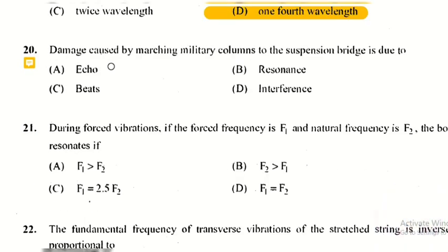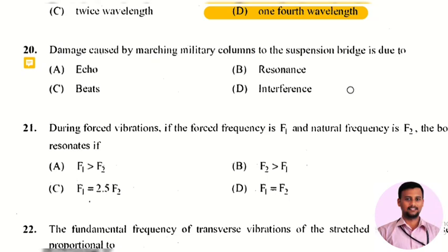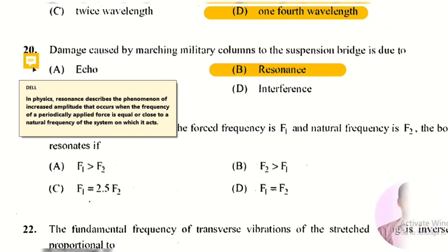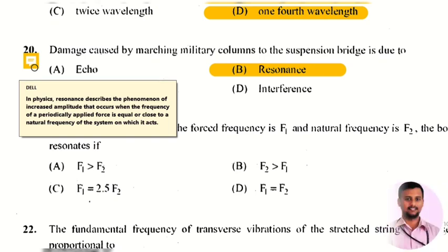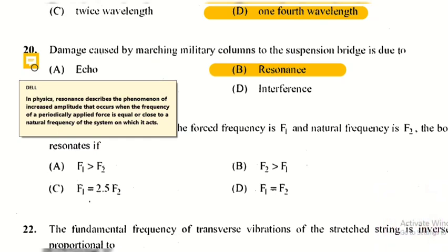The next question: the damage caused by a marching military column to a suspension bridge is due to? The right answer is option 2, resonance. Resonance describes the phenomenon of increased amplitude that occurs when the frequency of a periodically applied force is equal or close to the natural frequency of a system.